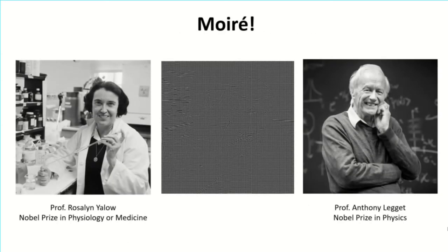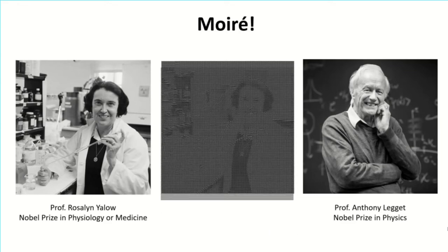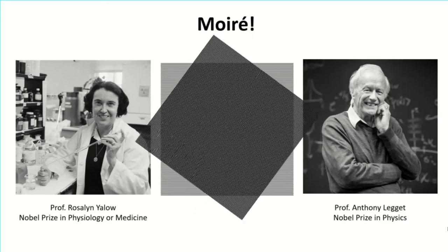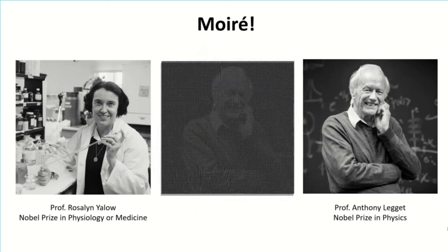Here we have an information-loaded grid in the center. Two of the many Nobel laureates from the University of Illinois are superimposed in this lattice. When we place a horizontal line grid onto it, we see Professor Rosalind Yalow, the first American-born woman to be awarded the Nobel Prize in Physiology and Medicine. When we rotate the horizontal grid by 90 degrees, we can see Professor Anthony Leggett, who won a Nobel Prize in Physics in 2003.